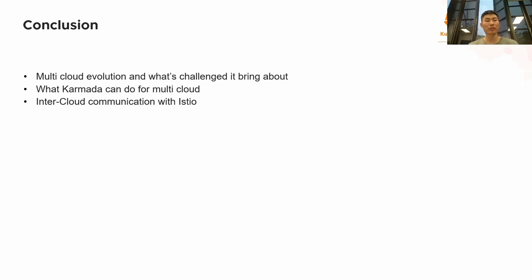Okay, this is all for today's presentation. Let's have a recap. First, we talked about multi-cloud evolution and the challenges it brings. Second, we talked about what Karmada can do for multi-cloud. And third, we talked about inter-cloud communication with Istio. I hope you gained good knowledge of multi-cloud application management from my presentation. Thank you. This is Q&A time. Thank you, everyone.